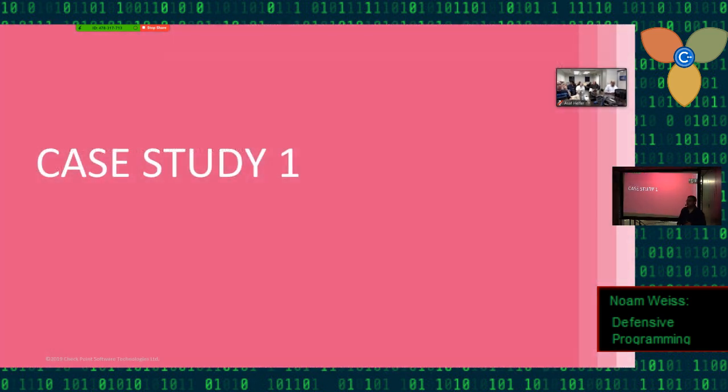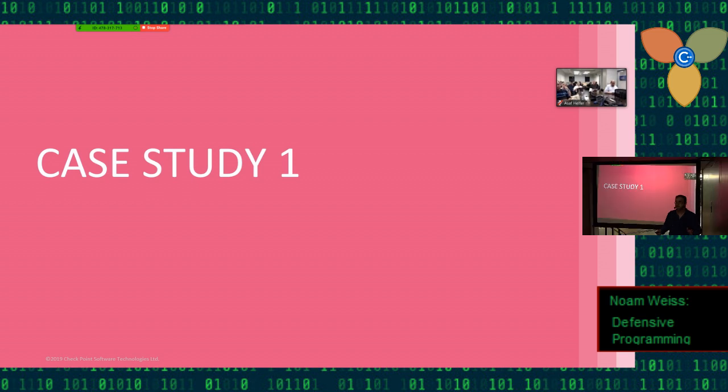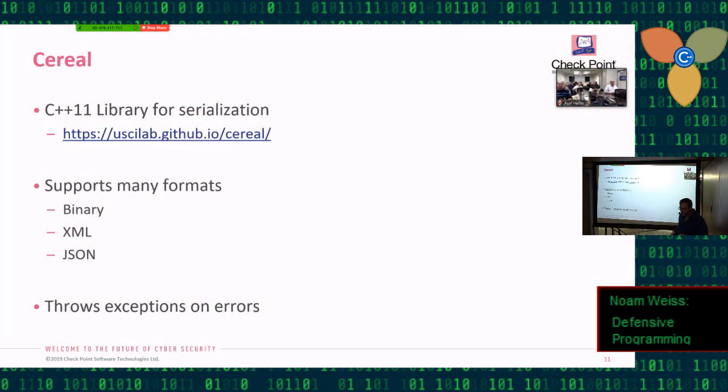Okay. So, unless we have general questions, we can move on to the first case study. If anybody has anything they want to say. Okay. So let's go on. So, I started working with a library called Cereal. It's a C++11 library. It does serialization. It takes your object and it lets it out in JSON, XML, or binary format that you can save and load later on.